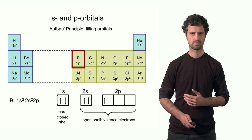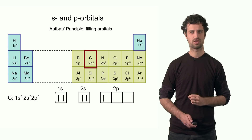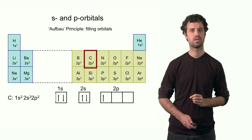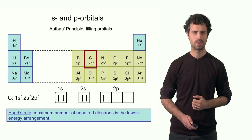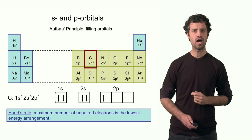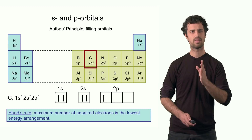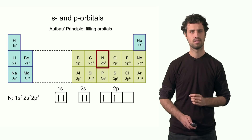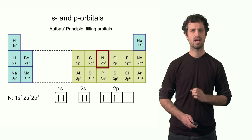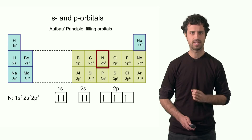Carbon has one extra electron relative to boron. Hund's rule states that the arrangement with the maximum number of unpaired spins is the lowest energy arrangement, so this extra electron goes into an empty 2p orbital rather than pairing up. The same holds for nitrogen, which has yet one more electron occupying the remaining empty 2p orbital. The electron configuration of nitrogen is 1s² 2s² 2p³.